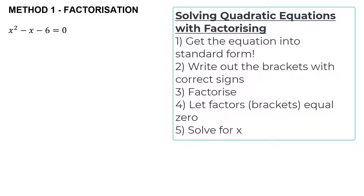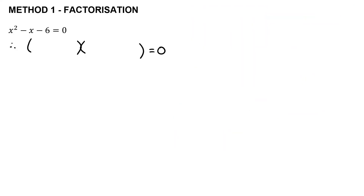The method we use to solve it is factorization. This is a trinomial, and the way to start factorizing trinomials is to write out two brackets. Look at the sign in front of the constant — because that's a negative, one bracket will need a positive and the other will need a negative.